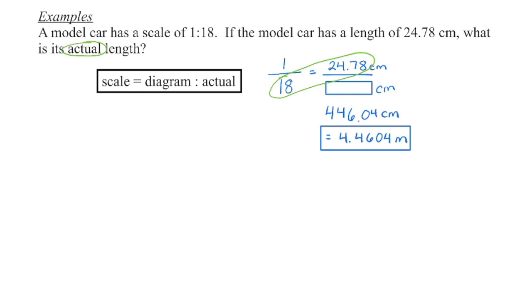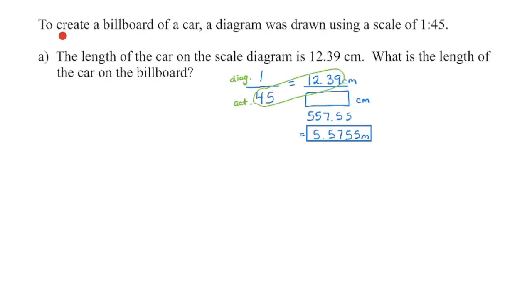In order to create a billboard of a car, we're first going to draw a diagram of that vehicle using a scale of 1 to 45. I would again write it as a fraction. So one unit on the diagram is going to be 45 units on the actual, or in this case, on the billboard. So we're going to take the length of the car on the diagram. So diagram is on top. We're going to put that on top. And the unit is centimeters. We're looking for the length on the actual, or in this case, billboard. Again, it's going to come out in centimeters when we multiply. And then I would just put it into meters. But it doesn't specify in this question what unit you have to have it in.